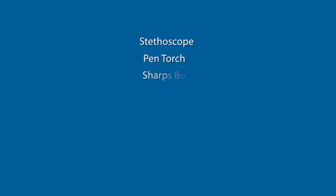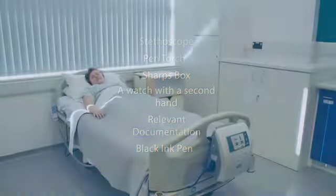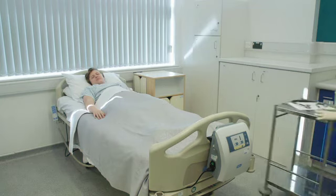In order to verify an expected death, you will require the following: a stethoscope, pen torch, a sharps box if removal of subcutaneous fluids is required, a watch with a second hand, relevant documentation, and a black ink pen.